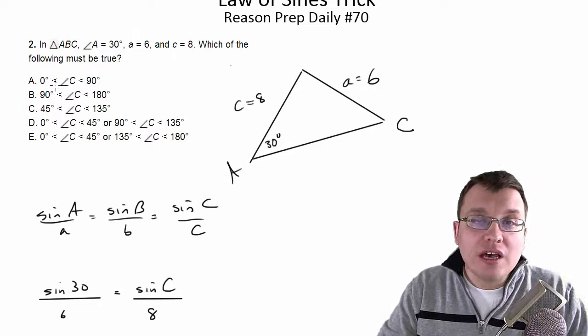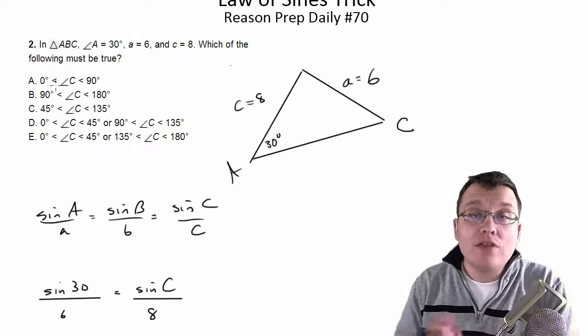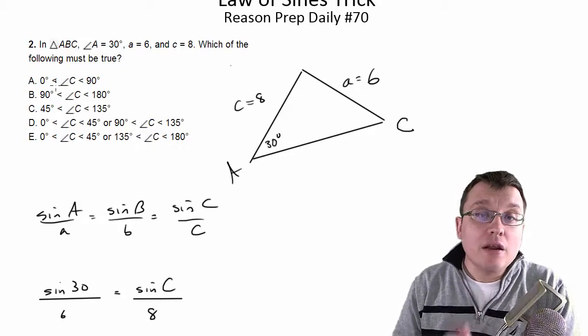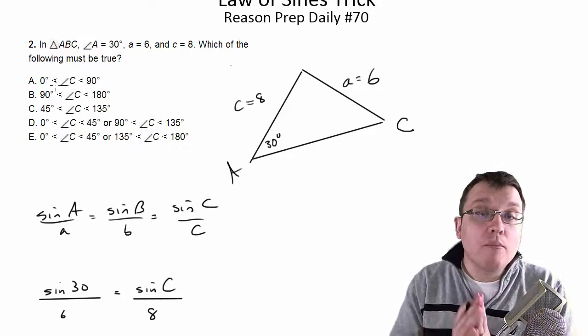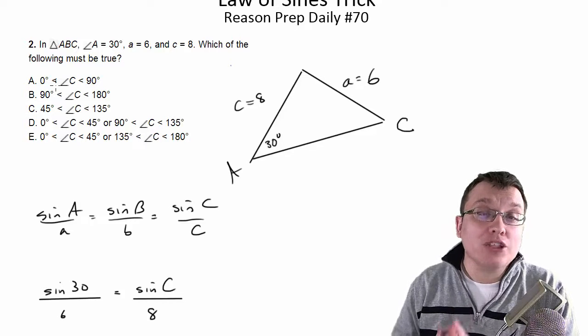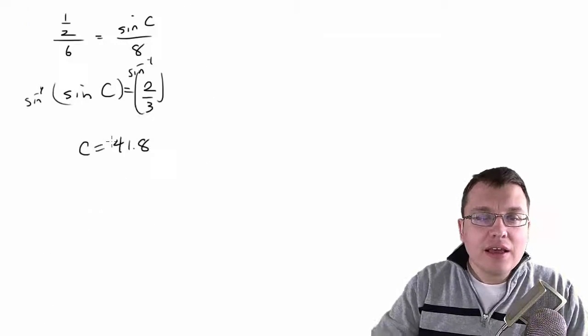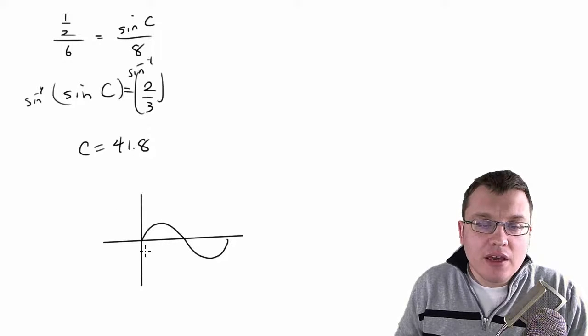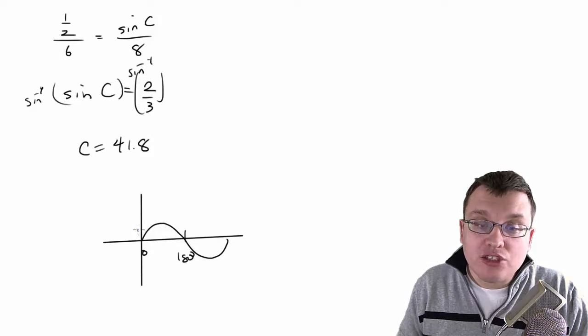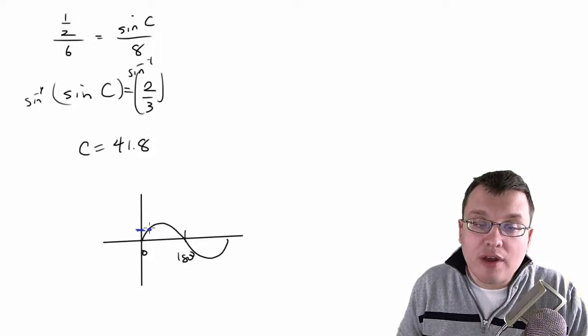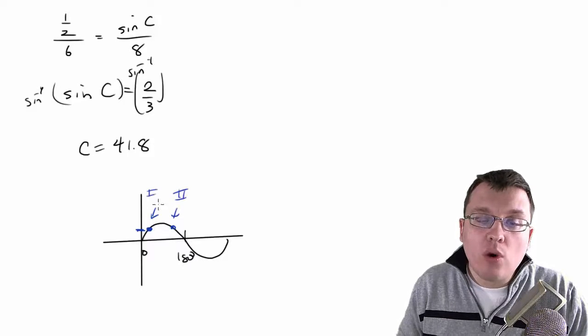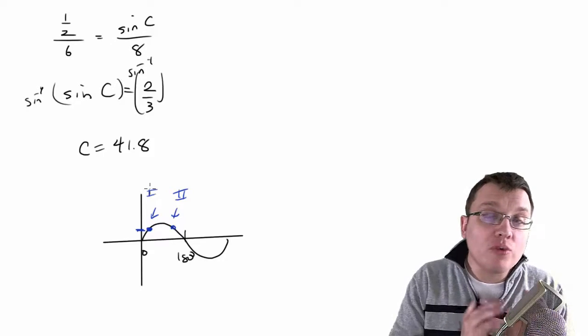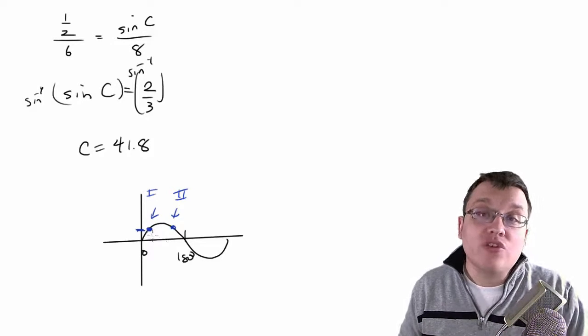The thing with law of sines is it's possible, depending on the way the triangle is constructed, to get more than one answer, to get more than one triangle that actually works. And if you wanted to get into the details of it, if you think of the sine curve, the sine curve looks something like this. Here's zero to 180. If you're finding a certain value for sine, which in this case is 2/3, like that's this y value right here, you can get two points, one in quadrant one, one in quadrant two. In other words, one between zero and 90 and one between 90 and 180 that give you the same answer.